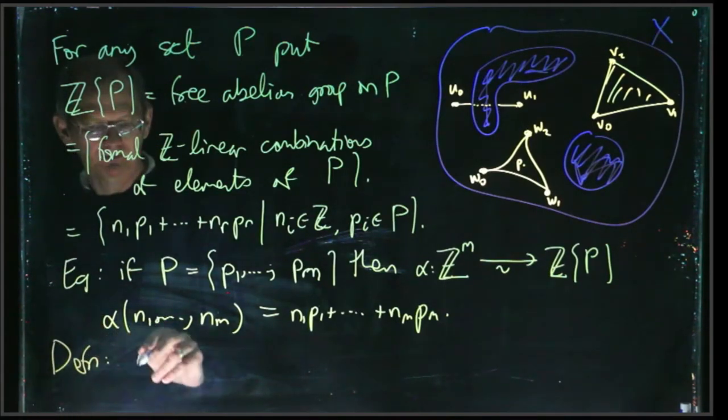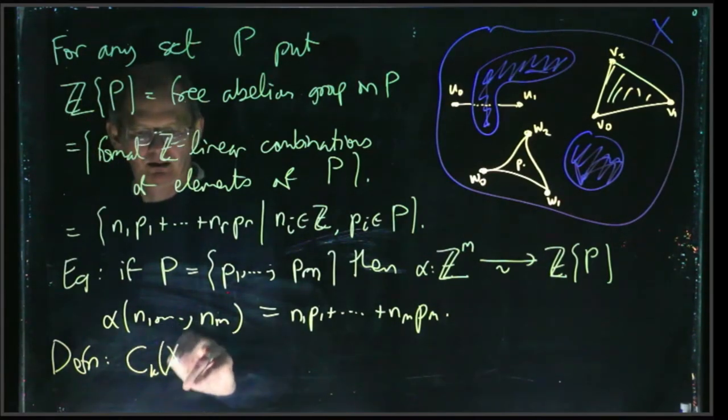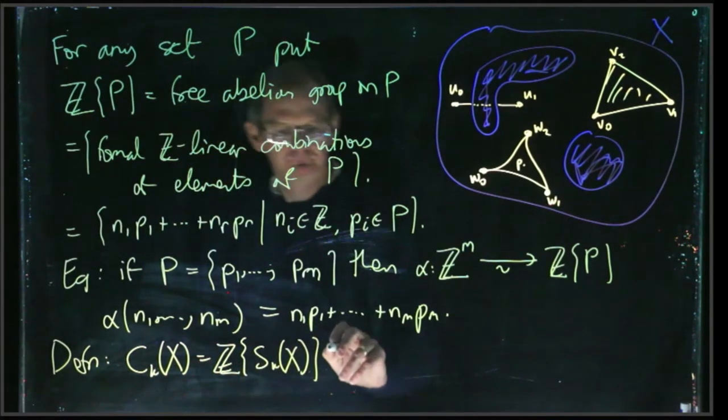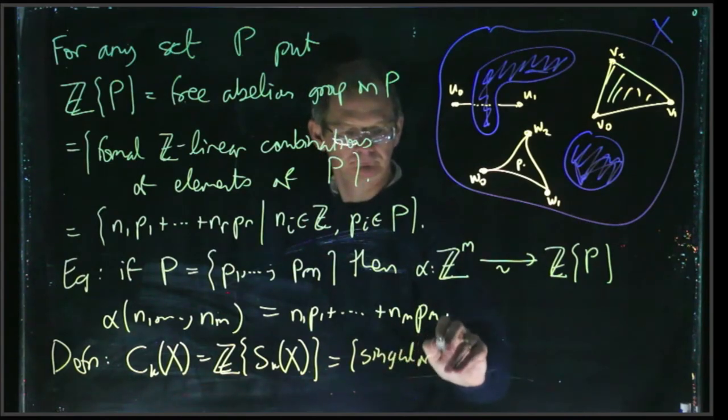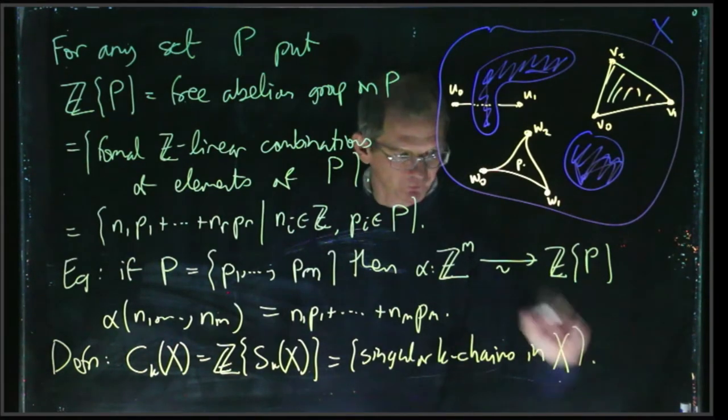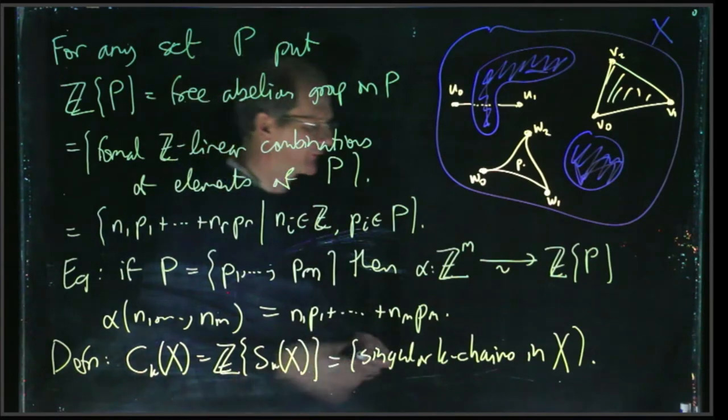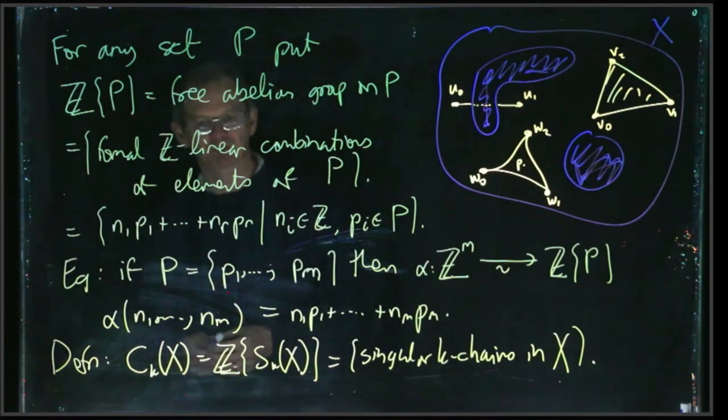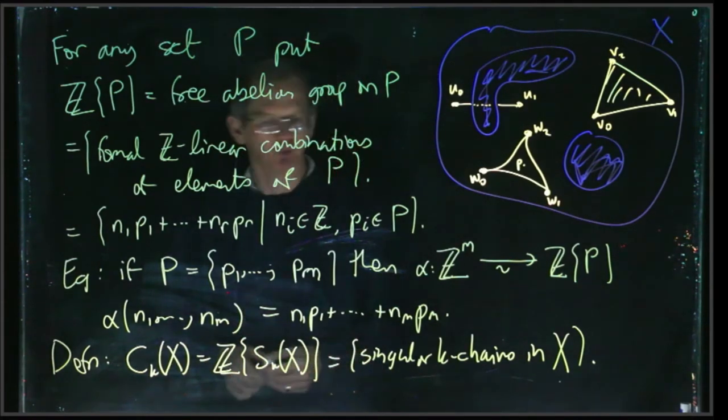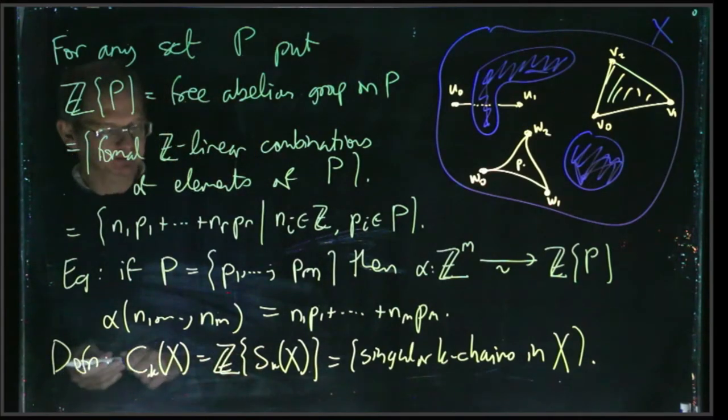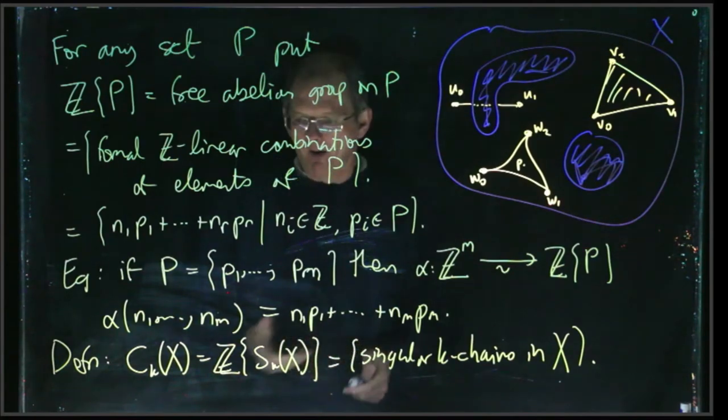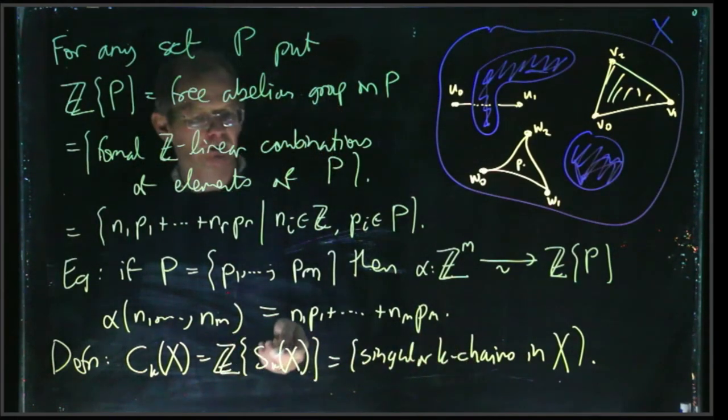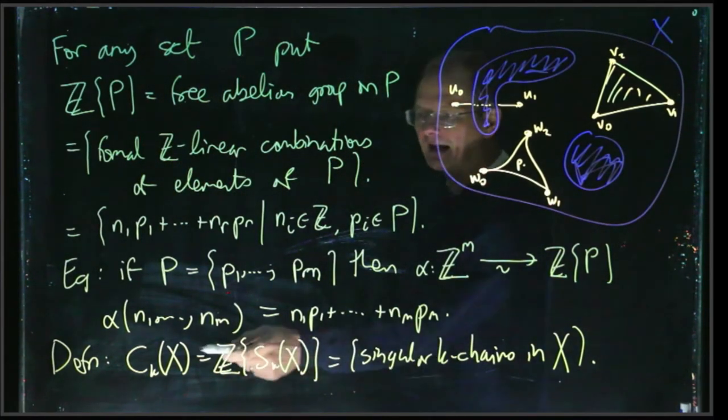And in fact, yeah, the key case is like this: Cₖ(X) is the free abelian group on Sₖ(X). Okay, so the word that's used is singular k-chain. So remember, Sₖ(X), that was the set of singular k-simplices, in other words, the set of all possible continuous maps from the k-simplex into X. So Cₖ(X) is just the set of formal linear combinations of these things. Okay, so we'll have some examples of that in just a second. But yeah, so remember, the elements of Sₖ(X) are called singular simplices. A singular k-chain is just a linear combination of these singular simplices. And so your Cₖ(X), that's the group of singular k-chains.